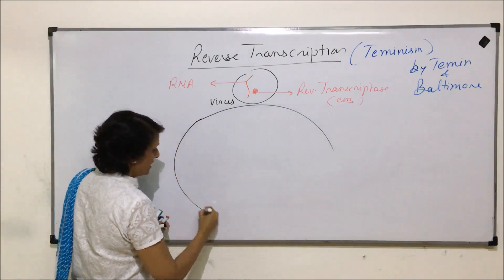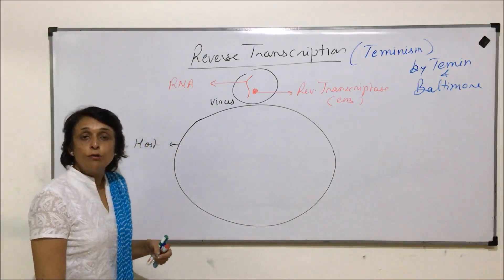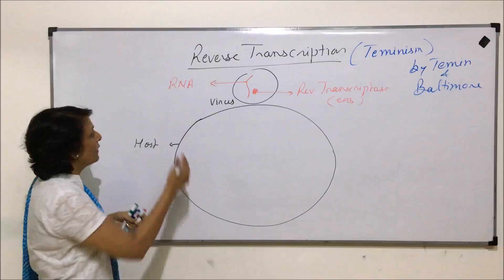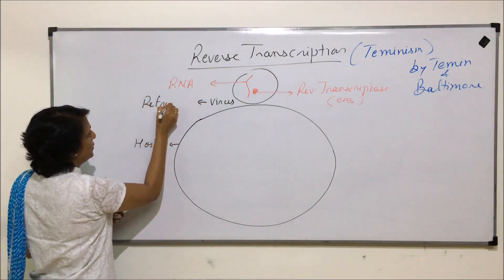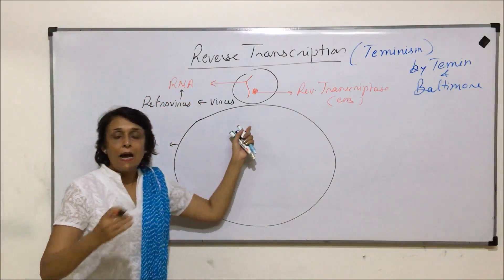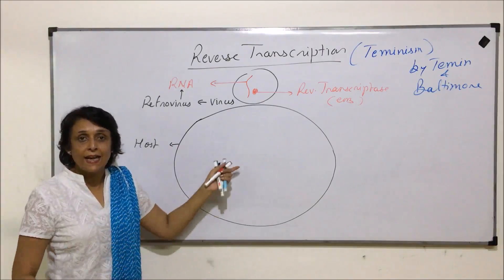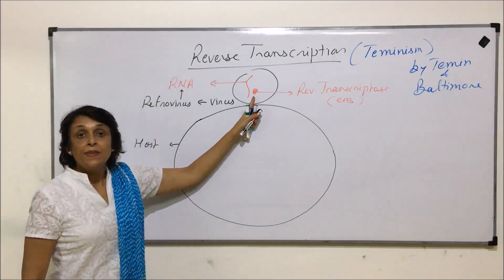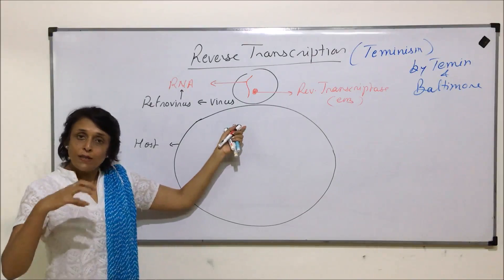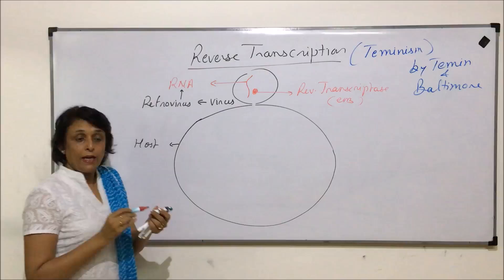If this virus affects a host cell — this is the host cell which the virus is infecting. The viruses which have RNA as genetic material are known as retroviruses. When the virus attaches onto the host cell, this is known as adsorption or attachment.